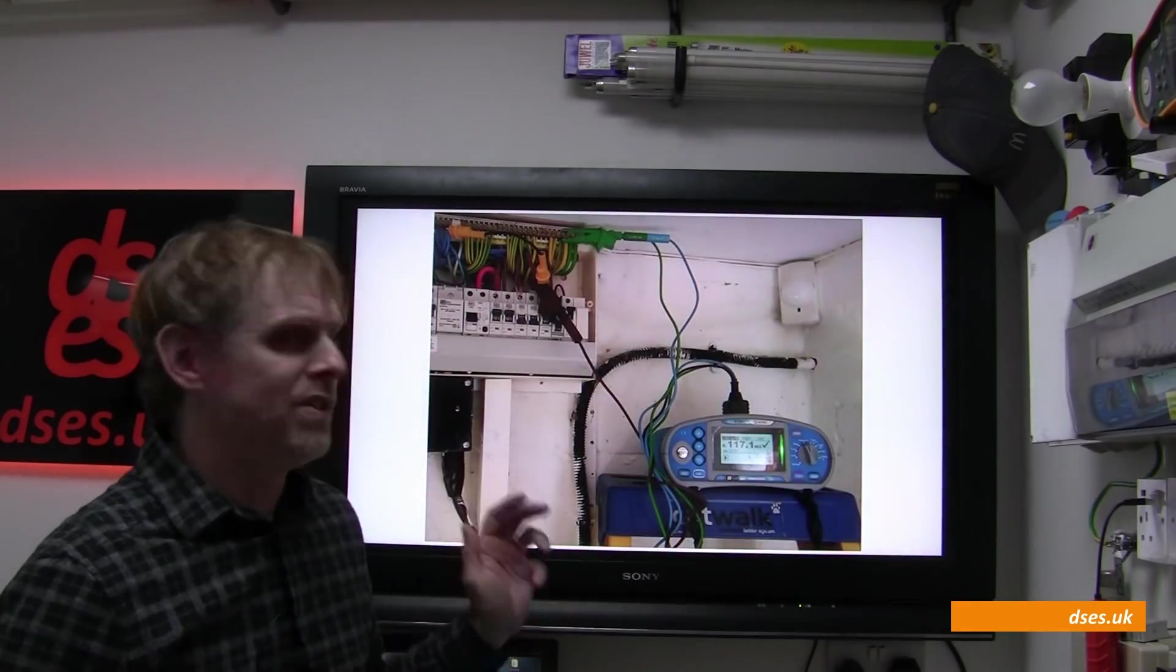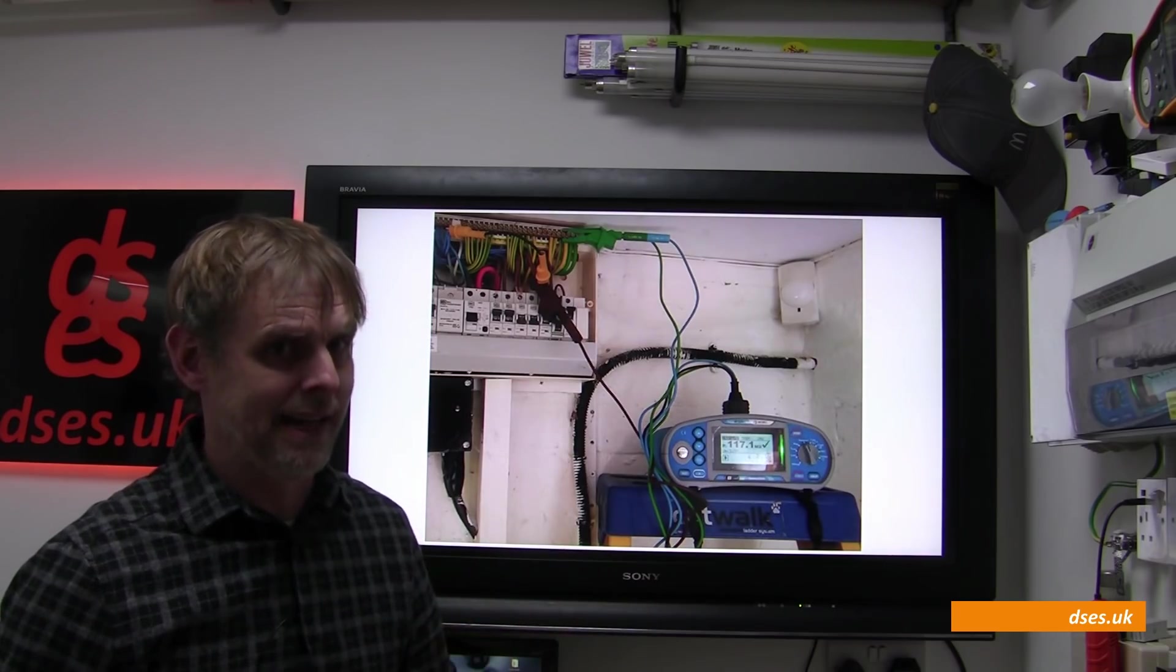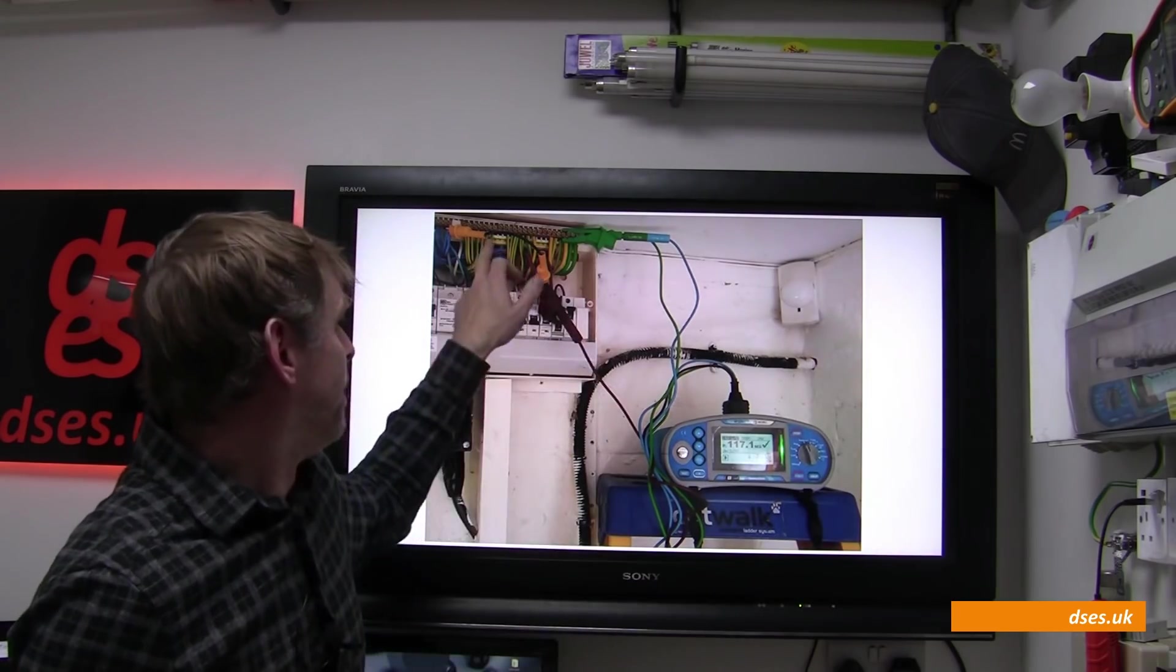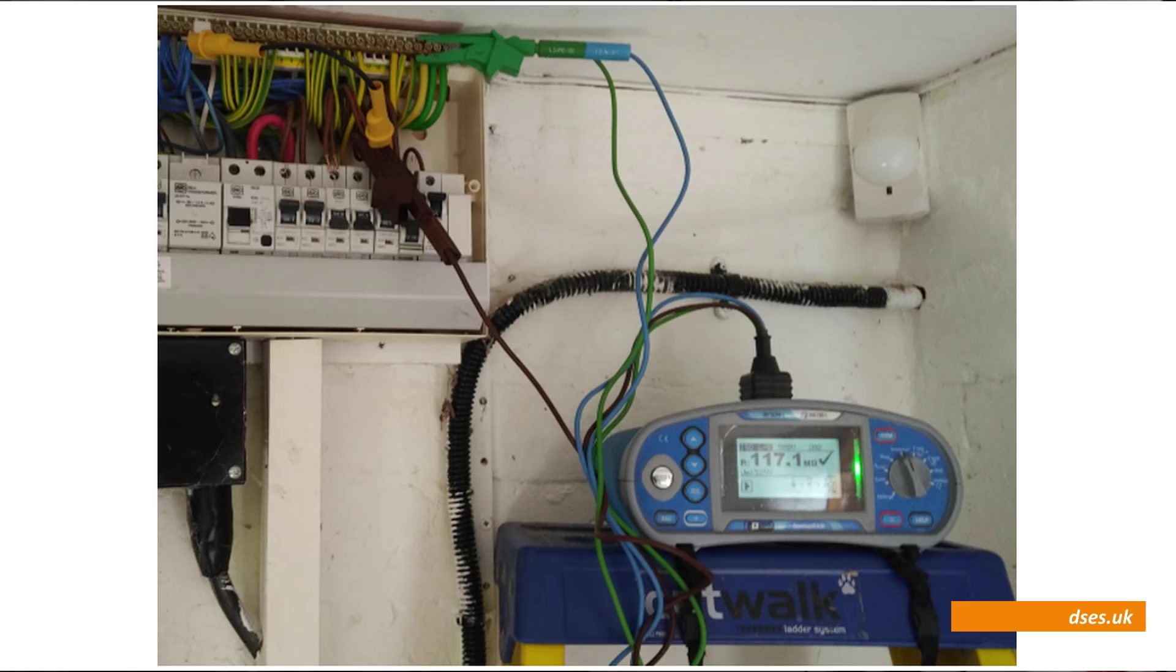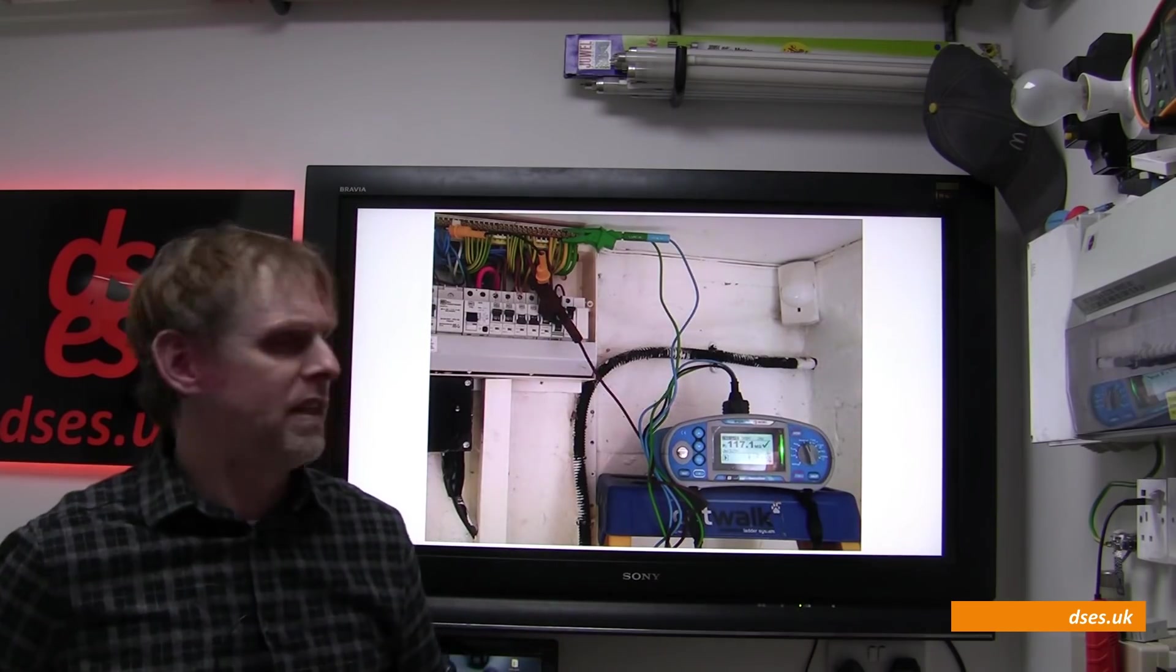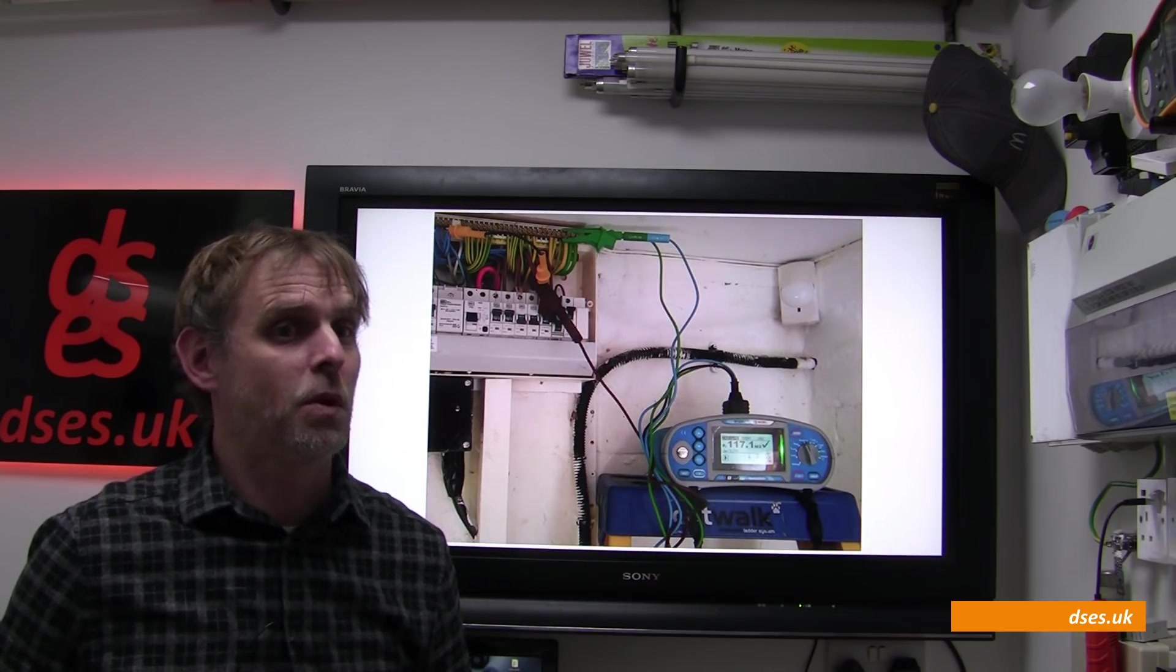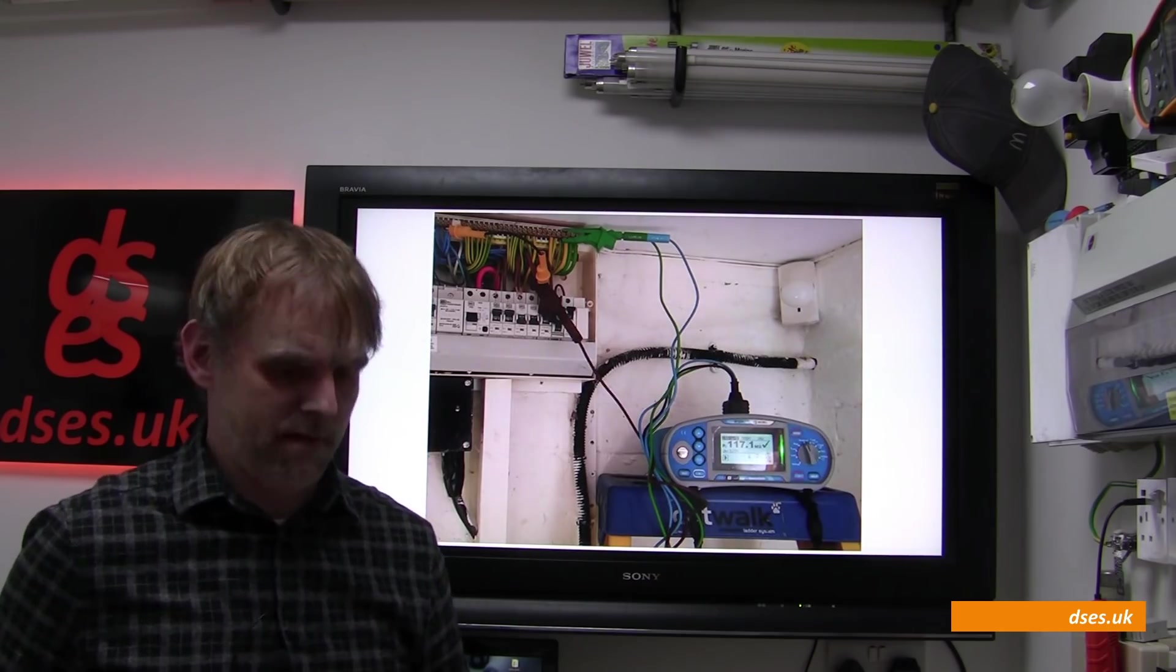We're insulation resistance testing at 500 volts between earth and our line neutral which have been connected together. The neutrals are disconnected from the neutral bar during testing because we want to ensure that we're getting the results only from our circuit under test and that our results are not being affected by neighbouring circuits. We're using the Metrol MI3100S here simply because it sits nicely on the top of the stepladder. But let's have a look at the results.